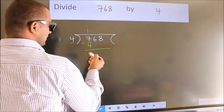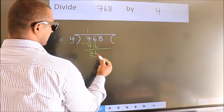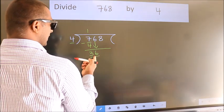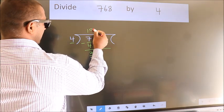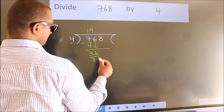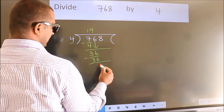After this, bring down the beside number. So, 6 down. So, 36. When do we get 36? In the 4 table, 4 nines, 36. Now we subtract. We get 0.